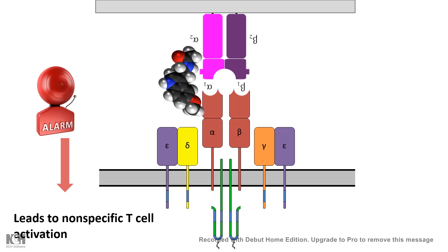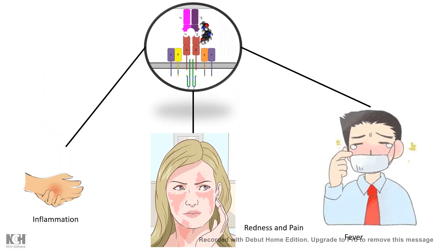In detail, superantigens bind to the variable alpha region of the T cell receptor and the alpha region of the MHC molecule laterally, bridging their interaction and generating a false alarm. The consequences of superantigen-mediated non-specific T cell and overall immune activation include inflammation, redness, fever, and in chronic cases, death.